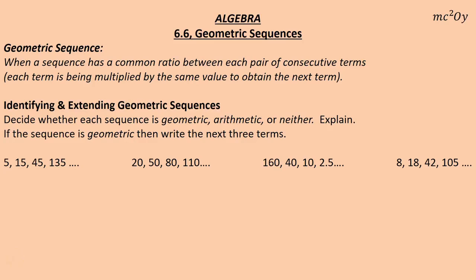Geometric sequences. A geometric sequence is a sequence that has a common ratio between each pair of consecutive terms — consecutive meaning each term one right after another. In other words, each term is being multiplied by the same value to obtain the next term. When you multiply a set of numbers continually by the same thing, you get what's called a geometric sequence.